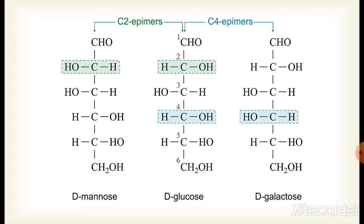Similarly, the right side compound is galactose, and it differs only at carbon number 4 from glucose, so it is the C4 epimer of glucose. The remaining carbon backbone is the same, but they differ from each other only at a single stereogenic center. This condition is known as epimers and these compounds are known as epimers.